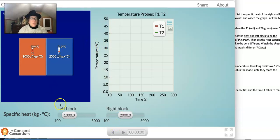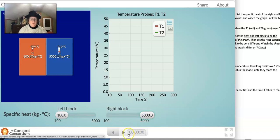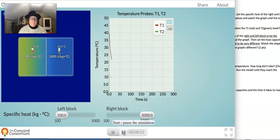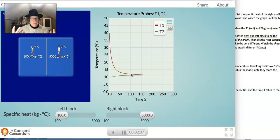So here's the specific heat of the left block, the orange block. And here's the specific heat of the right block. We'll set that really high. We'll hit play, and we'll see what happens. The temperature of block one, the one with low specific heat, just plummeted, which is predictable because low specific heat means your temperature is going to fluctuate very quickly, where the block with high specific heat is barely changing its temperature at all.